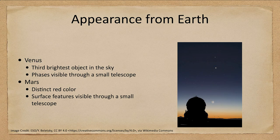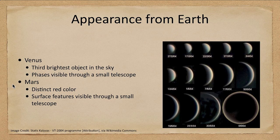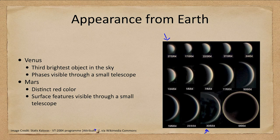Venus also has phases which are visible through a small telescope, and we can see those here. These are one of the things that were discovered by Galileo, showing that Venus had to orbit our Sun. Here we see the phases from a very small phase that is about half full, up to a very close to new phase.